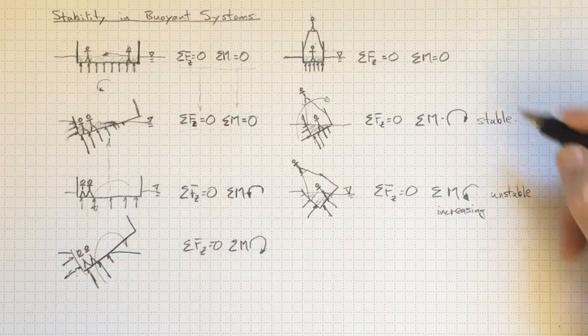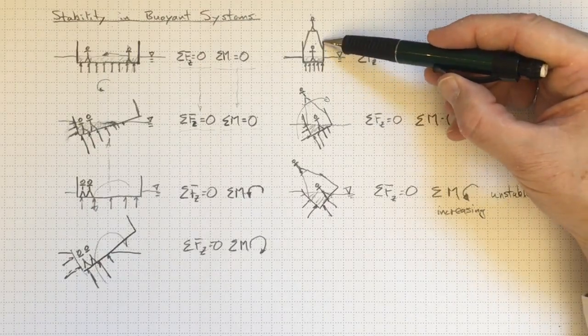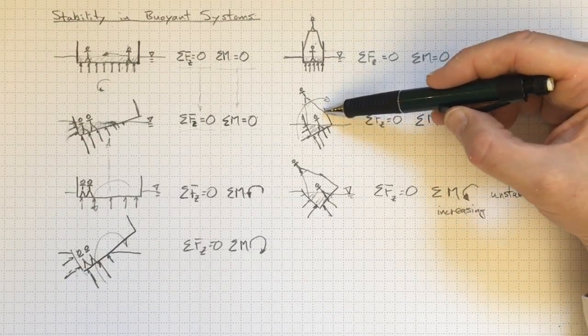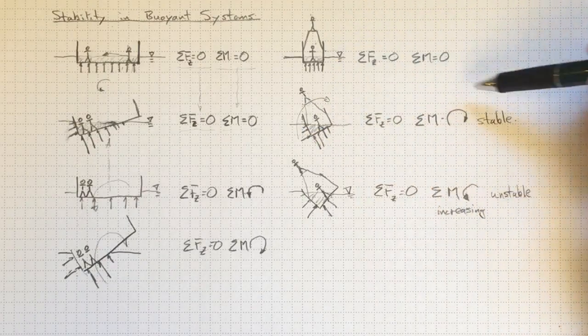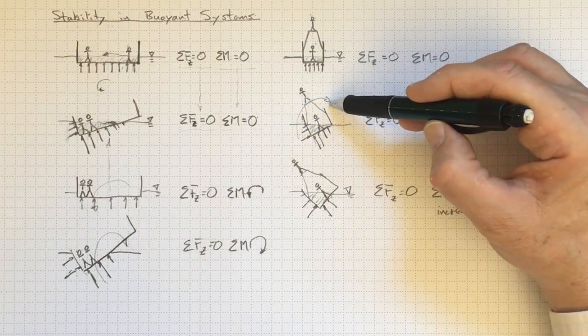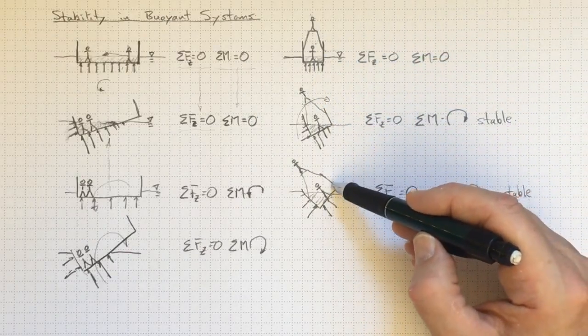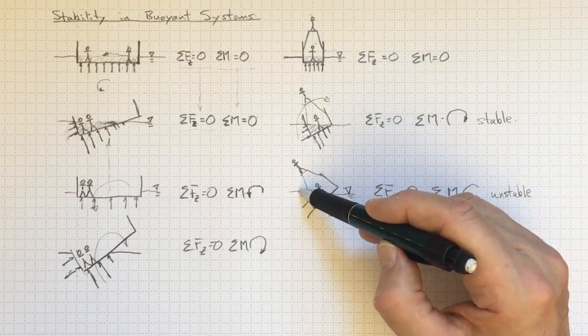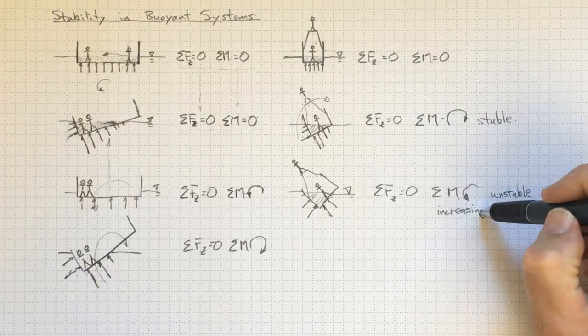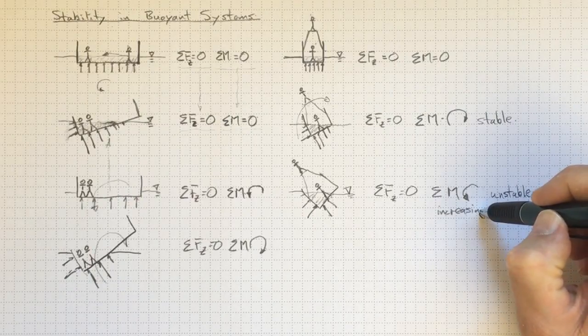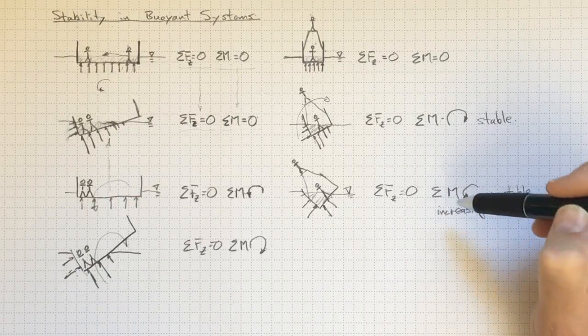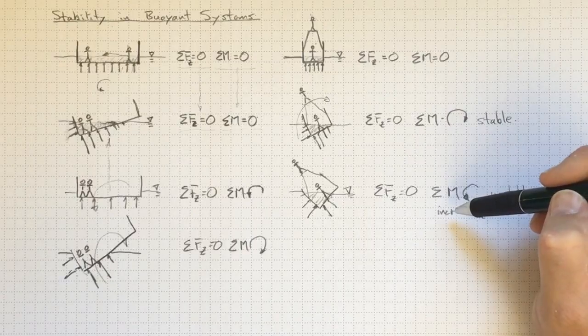And that's kind of interesting. I went from this configuration, which if I disturbed it a little bit off to the side, generated a moment that caused me to come back. So it was stable to start with. But once the boat heeled over too far, the system became unstable. So stability is something that changes as you change geometries.